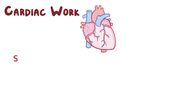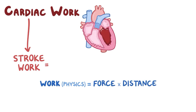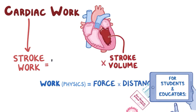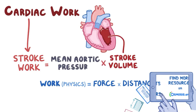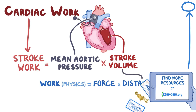Cardiac work, also known as stroke work, is similar to the concept of work in physics. In physics, work is defined as force times distance. Stroke work can be thought of as work performed by the left ventricle to eject a volume of blood, defined as stroke volume multiplied by mean aortic pressure. Here, stroke volume corresponds to distance, whereas mean aortic pressure corresponds to force.